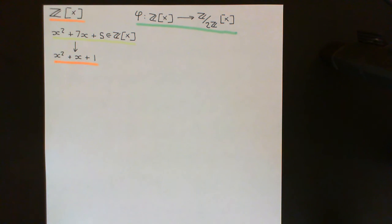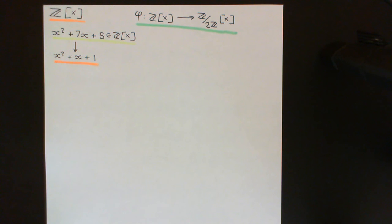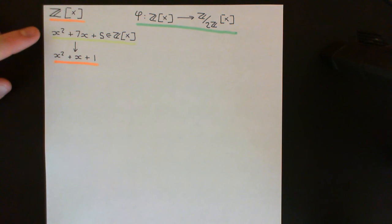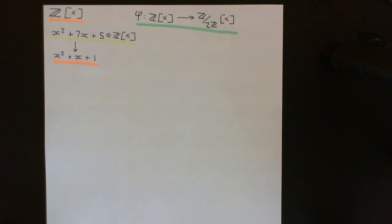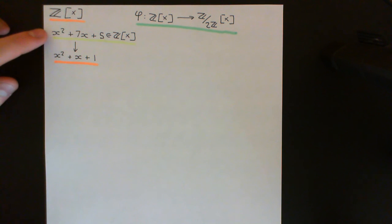To get a degree-2 polynomial, we could multiply a degree-2 with a degree-0, or a degree-1 with a degree-1. The degree-2 with degree-0 option doesn't satisfy our theorem since the degree-2 factor wouldn't be of smaller degree. So the only option is to try to write x² + x + 1 as a product of two degree-1 polynomials. If we succeed, we fail; if we cannot, we conclude irreducibility.